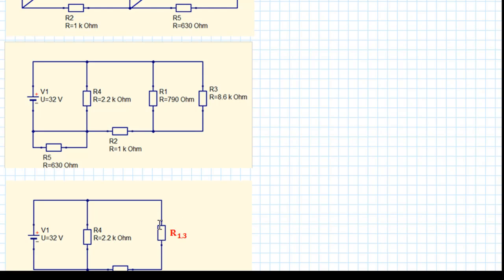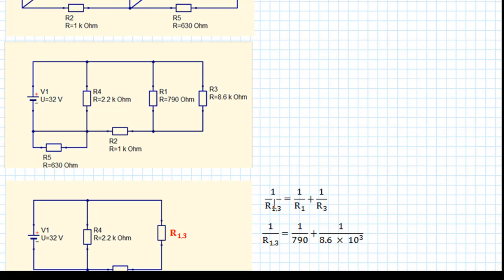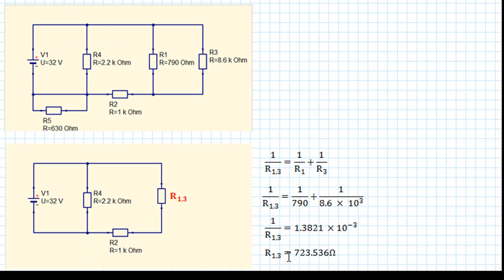So R13 is going to replace R1 and R3, and because those two are in parallel we use the formula: 1 over R13 equals 1 over R1 plus 1 over R3. Substituting in the values: R1 is 790 ohms, R3 is 8.6 × 10³ ohms. Calculating, 1 over R13 equals 1.3821 × 10⁻³. Remember that's 1 over R13, so we need to invert this to get the answer. R13 is equal to 723.536 ohms.